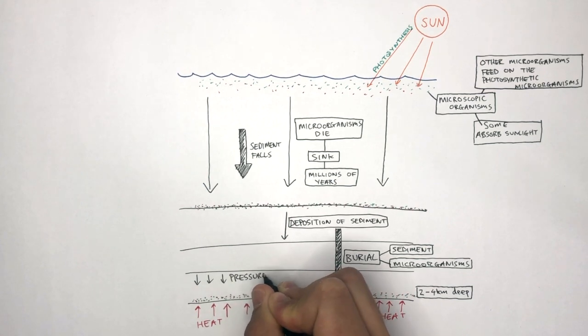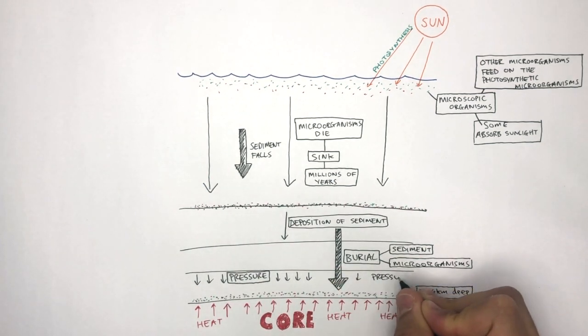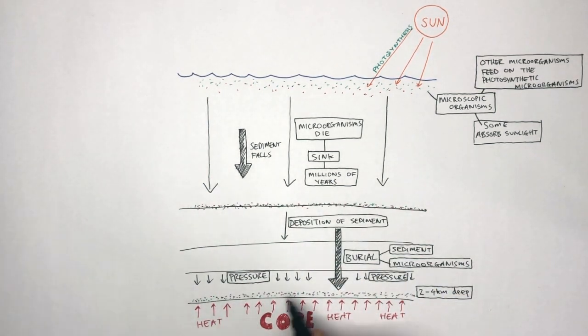And along with the pressure from the rocks above, squeezing the microorganisms, this heat and pressure produces crude oil, which you can see here is the black substance, very deep underground.